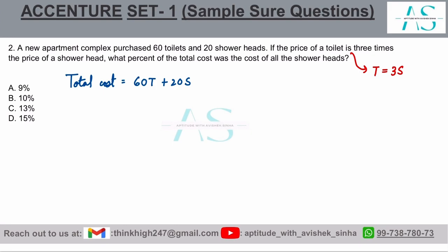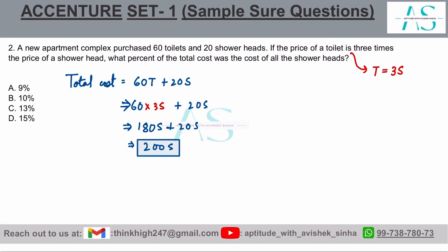Now I replace t with 3s, so this becomes 60 × 3s plus 20s. The cost becomes 180s plus 20s, which is 200s. This is the total cost in terms of shower heads.